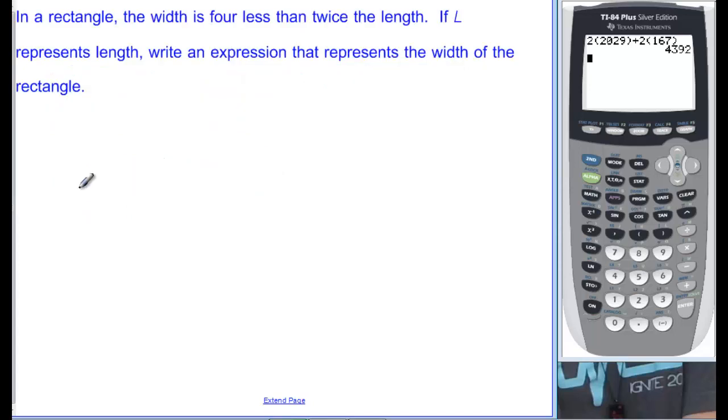Second example, in a rectangle, the width is 4 less than twice the length. If L represents length, write an expression that represents the width of the rectangle. So we want to know width is equal to what? And they tell us here that the width is, so that usually means equal, and then they're going to tell us what it is. It's 4 less than twice the length.